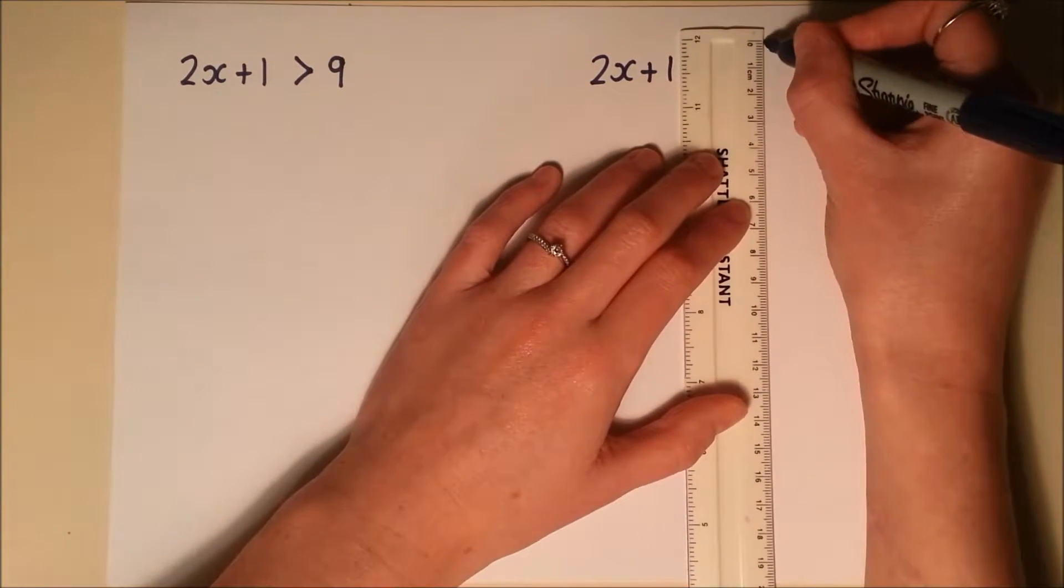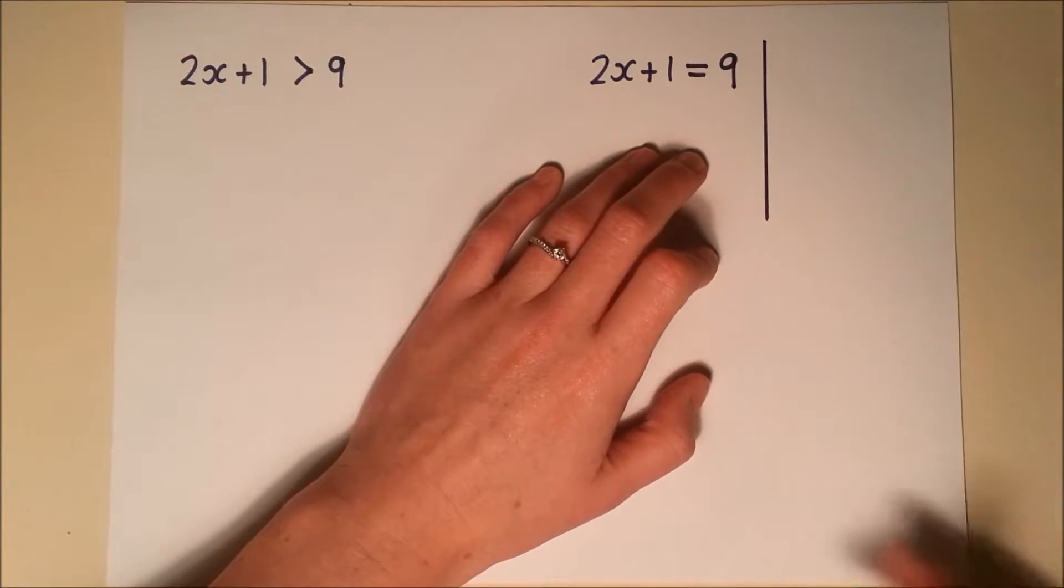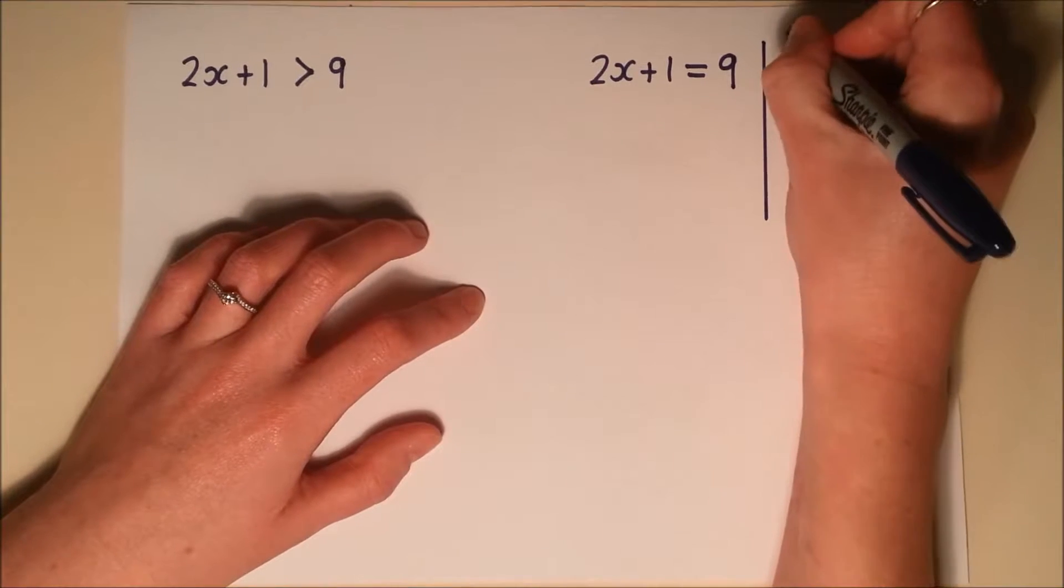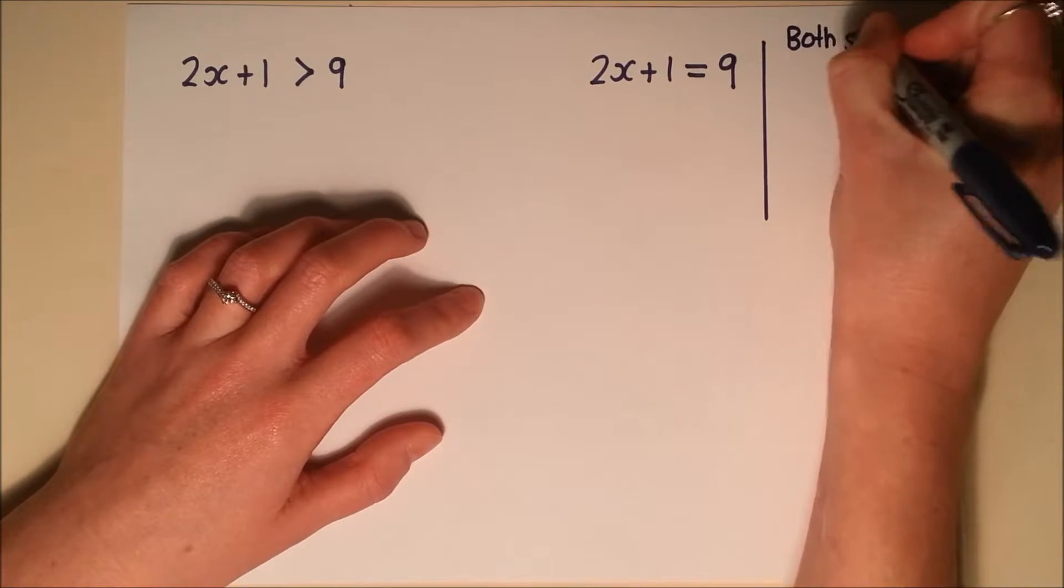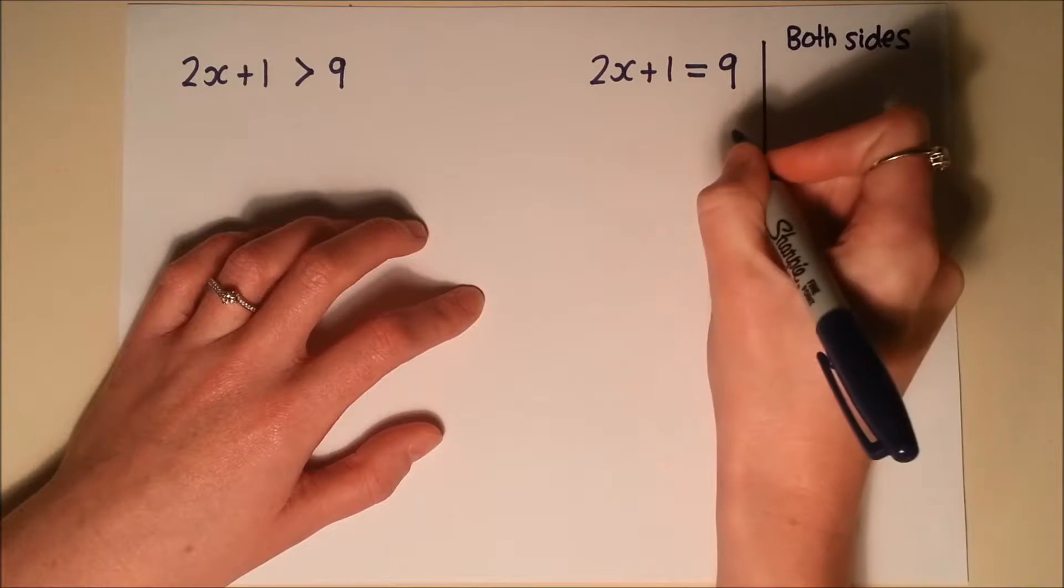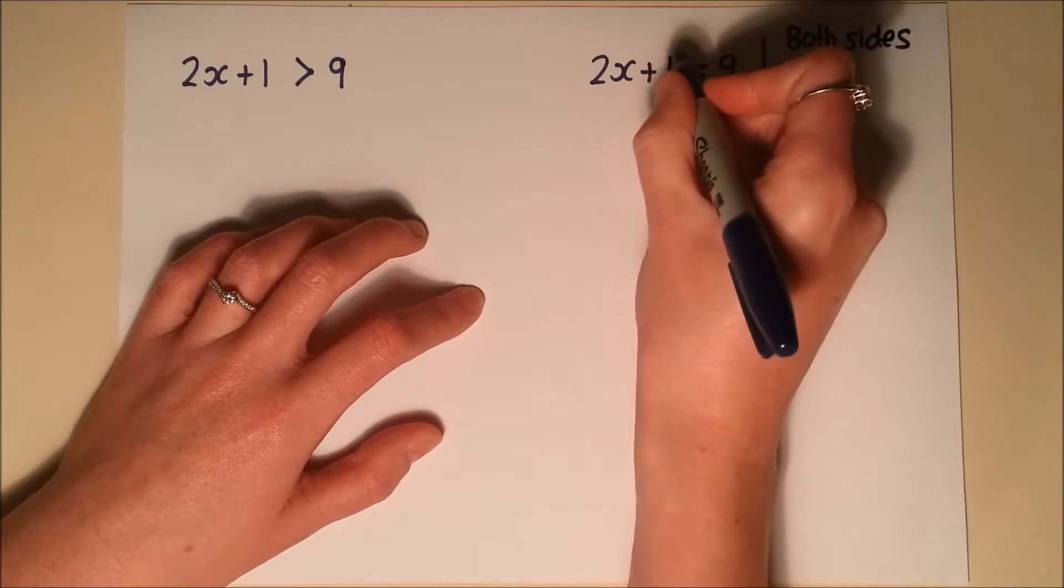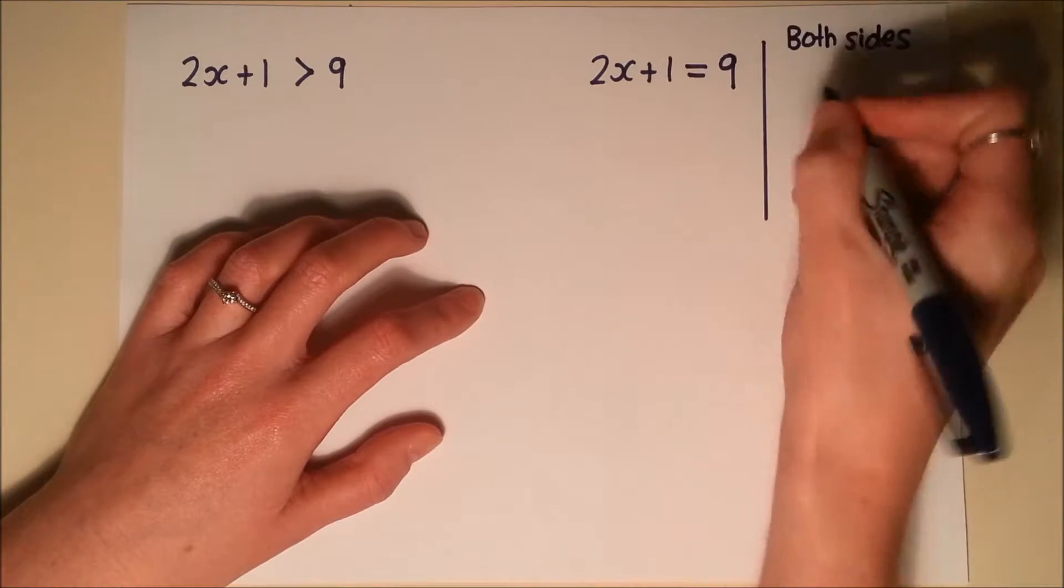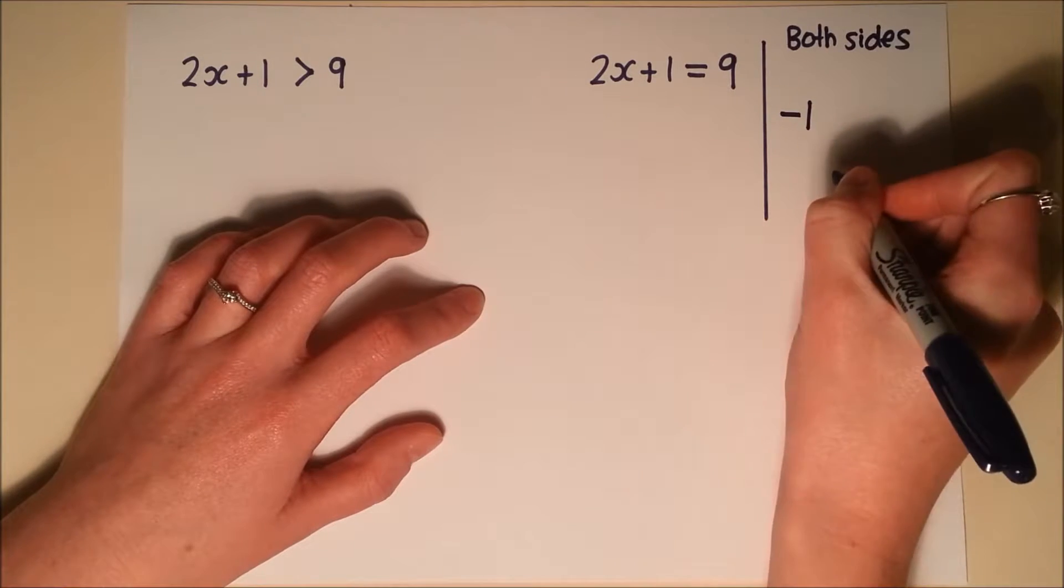So this is just how I like to set up my working out. I like to write down what I'm doing to both sides on the right. It's completely up to you as long as you're showing your working. So the first thing I'm going to do is subtract 1 from both sides of that equation. So I'm writing down, subtracting 1 there.